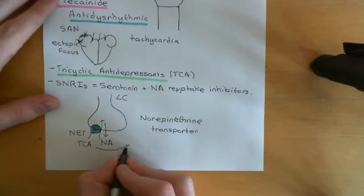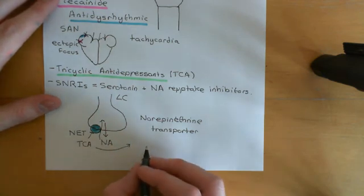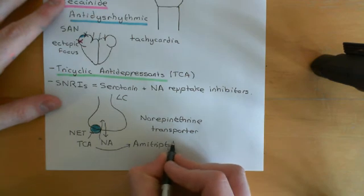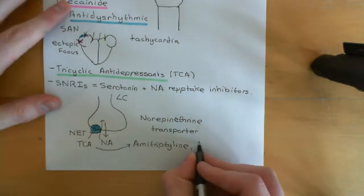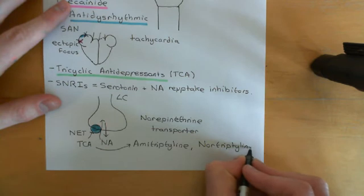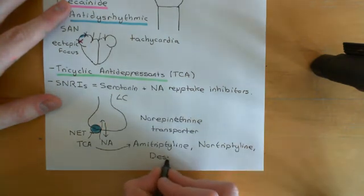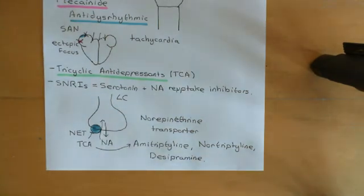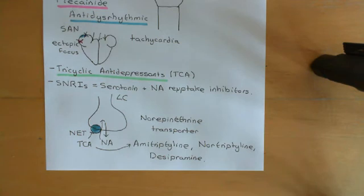Some examples of tricyclic antidepressants include amitriptyline, nortriptyline, and desipramine. These drugs all block the norepinephrine transporter and therefore potentiate the signaling between the locus coeruleus and the enkephalin-containing interneurons in Rexed lamina 2 of the dorsal horn of the spinal cord, thus potentiating the block of the gate between the primary neurons and the secondary neurons.